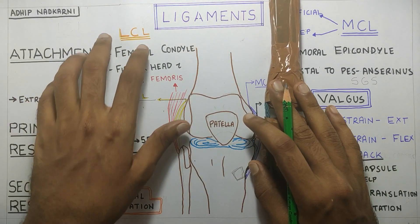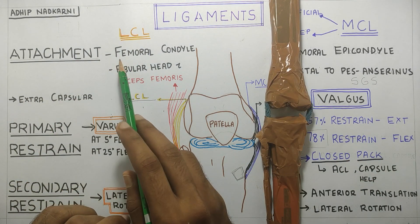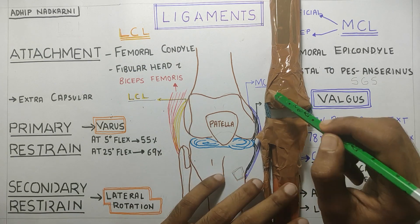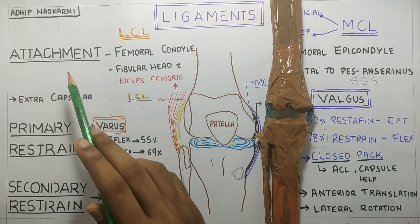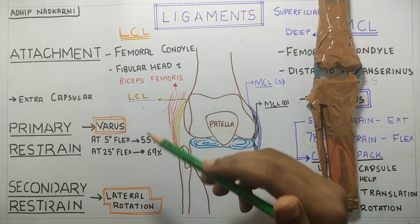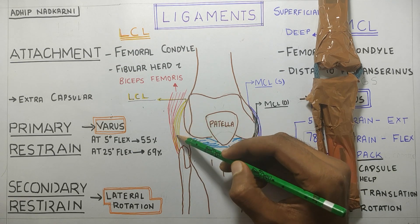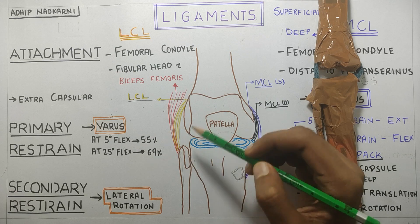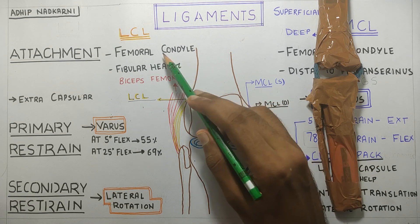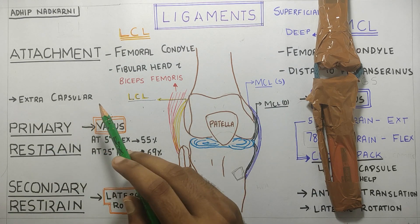Moving to the lateral collateral ligament: proximally it attaches to the lateral femoral condyle, and distally it is attached to the fibula along with biceps femoris. You can see the red part is the biceps femoris and LCL both attaching to the fibula, while proximally LCL is attaching to the femoral condyle. LCL is an extra-capsular ligament.